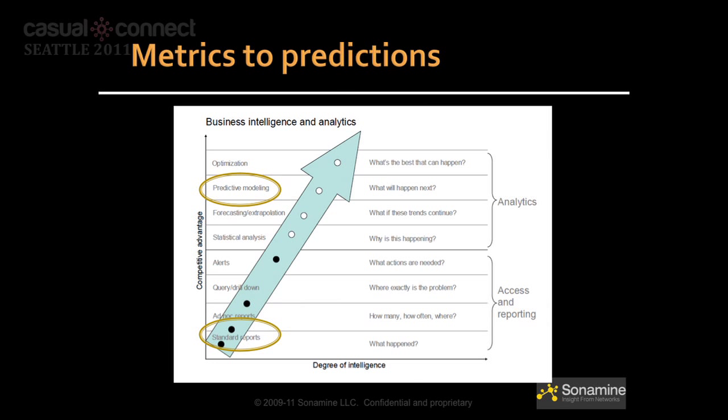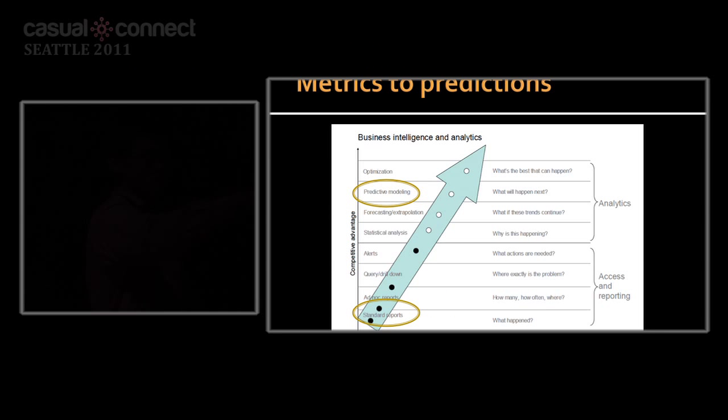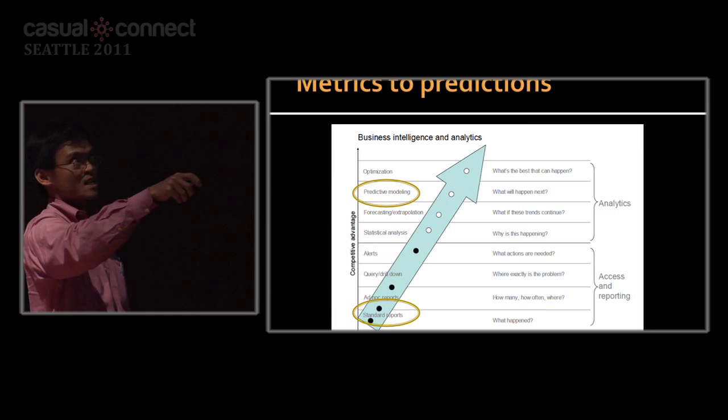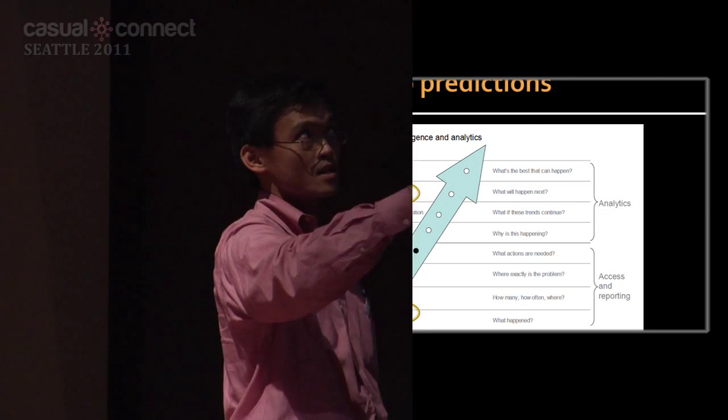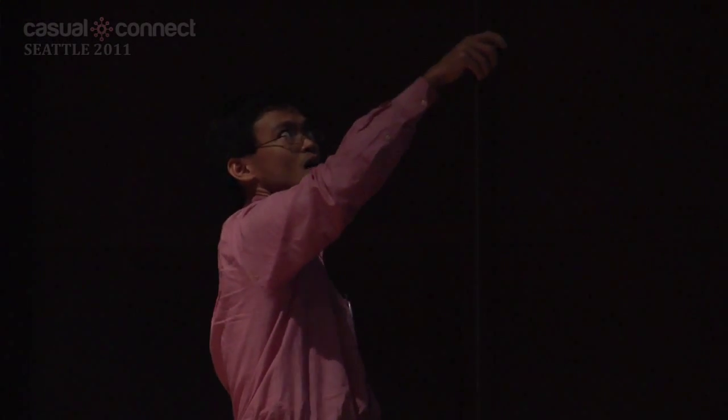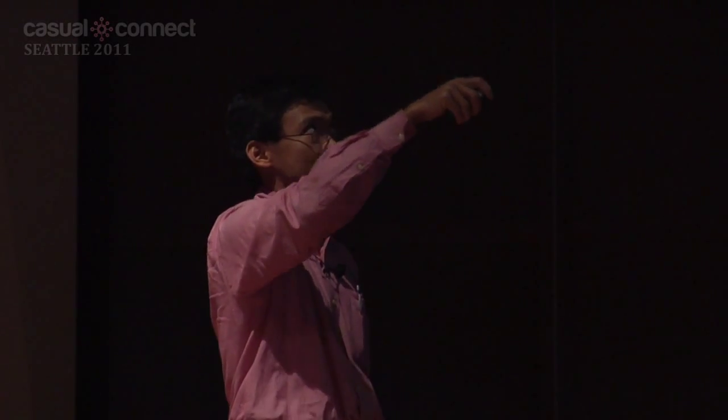We're going to touch on predictive modeling. The scale goes from: What happened? How often? Where is the problem? Why is this happening? What if it continues — that's forecasting — and then predictive: what will happen next? This axis represents how much competitive advantage you get when you implement these different analytic systems. Once everybody knows their MAU, DAU, APU, and payments by country, it's no longer a competitive advantage. Every game developer has these numbers already.